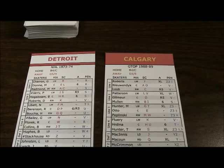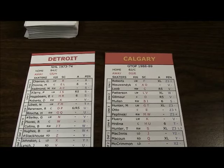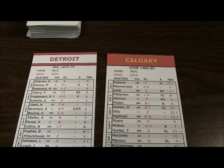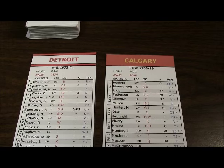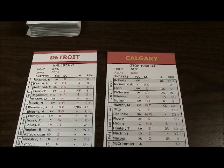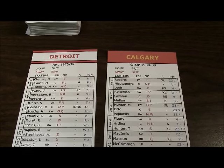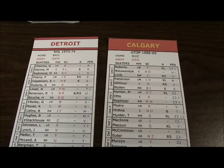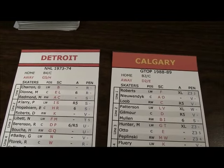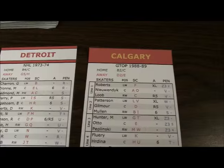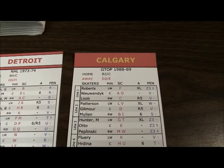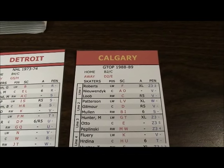Welcome to Part 3 in How to Play Shootout Hockey, Tabletop Board Game. In this episode we will show how to assign penalties. Our sample teams are the 1974 Red Wings and the 1989 Calgary Flames from the great teams of the past set.